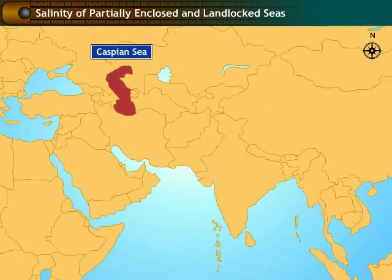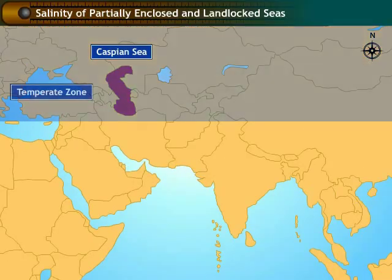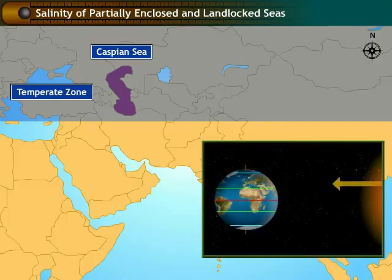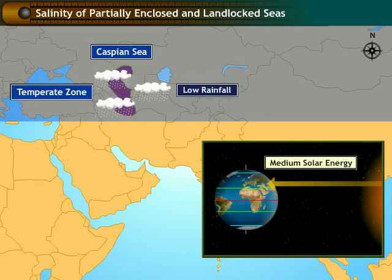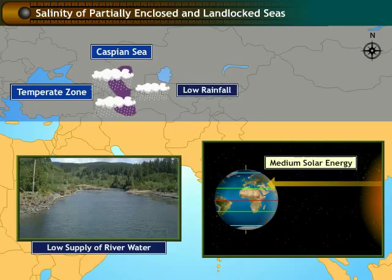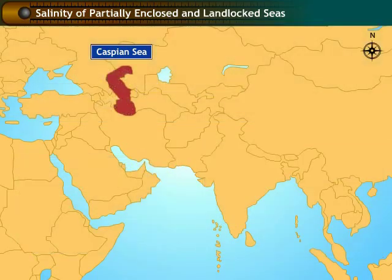The Caspian Sea is located in the temperate region. The sunlight reaching this region is medium, hence the rate of evaporation is low. The region receives less rainfall with a low supply of fresh water. Hence, the average salinity of this sea is 155 parts per thousand.